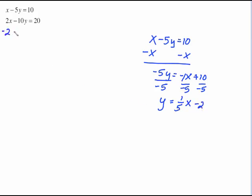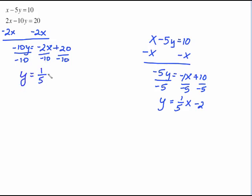This one, same steps, subtract 2x from both sides, which is going to give us negative 10y equals negative 2x plus 20 and then divide everything by negative 10. Clean this up and we have y equals negative 2 divided by negative 10 reduces to a positive 1 fifth and 20 divided by negative 10 is negative 2.